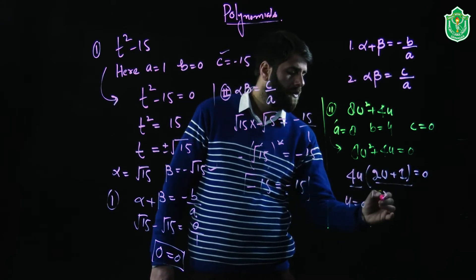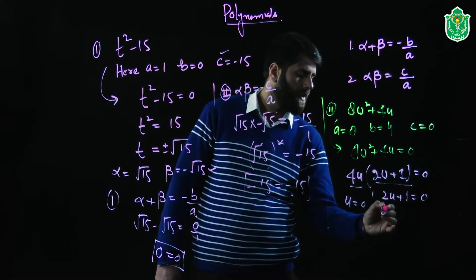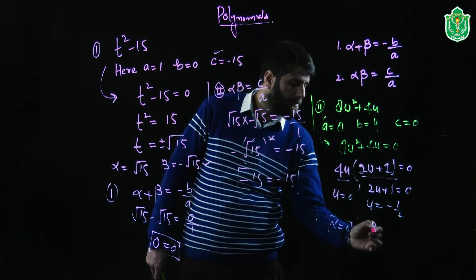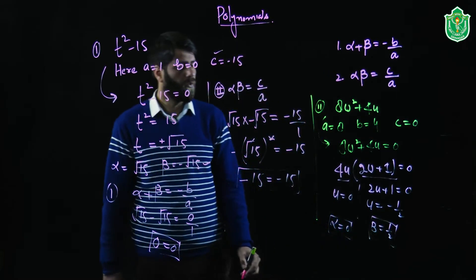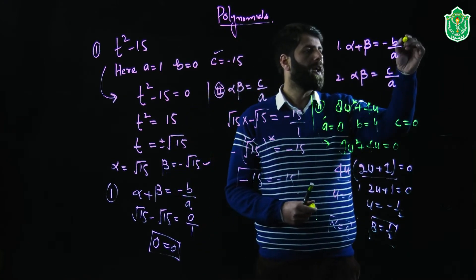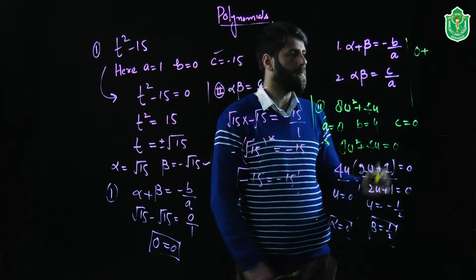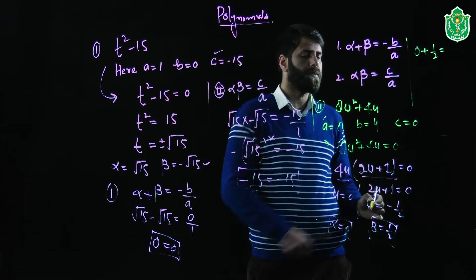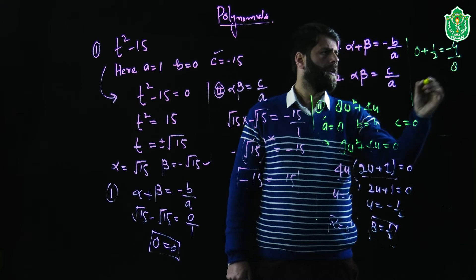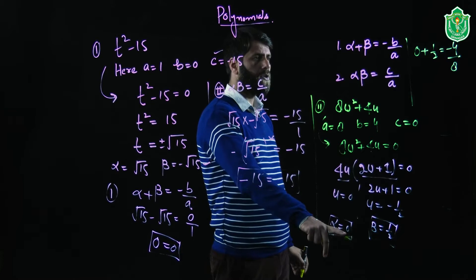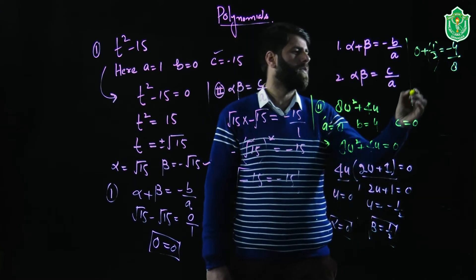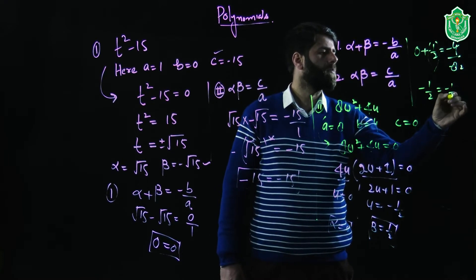There are two linear factors. Equating them to zero we get u equals 0 or 2u plus 1 equals 0, giving u equals minus 1 divided by 2. So alpha is 0 and beta is minus 1 by 2. For the first relationship, alpha plus beta equals 0 plus minus 1 by 2 equals minus 1 by 2, and minus b divided by a equals minus 4 divided by 8 equals minus 1 by 2. So minus 1 by 2 equals minus 1 by 2 — verified.